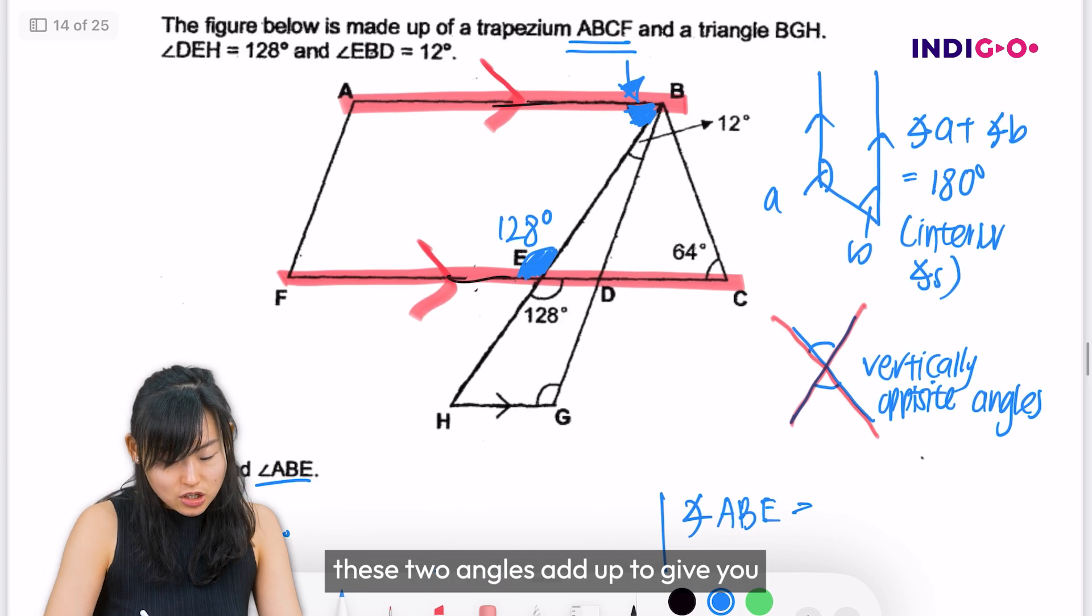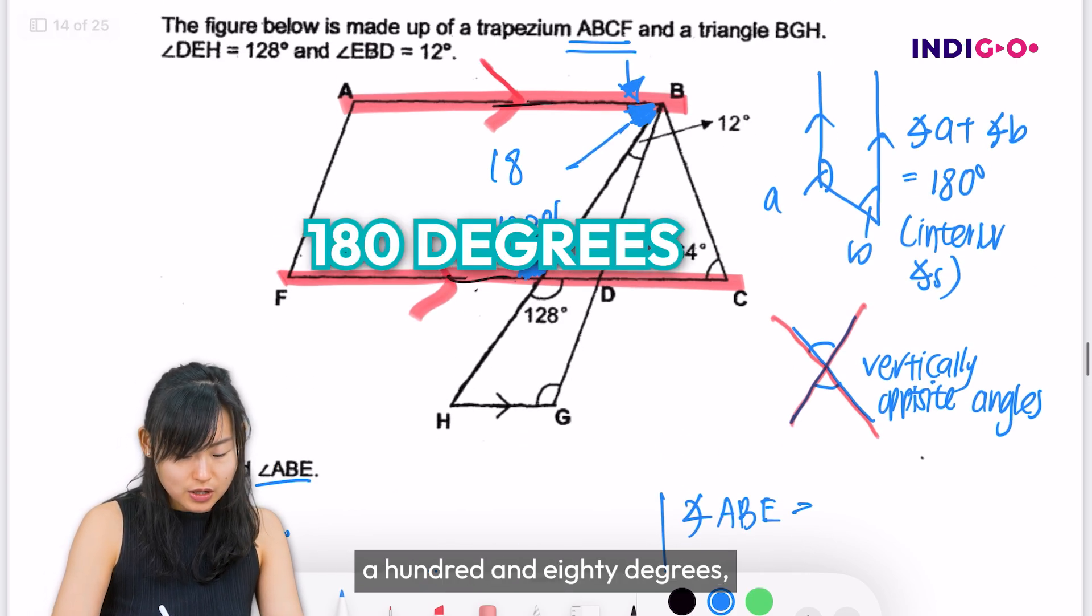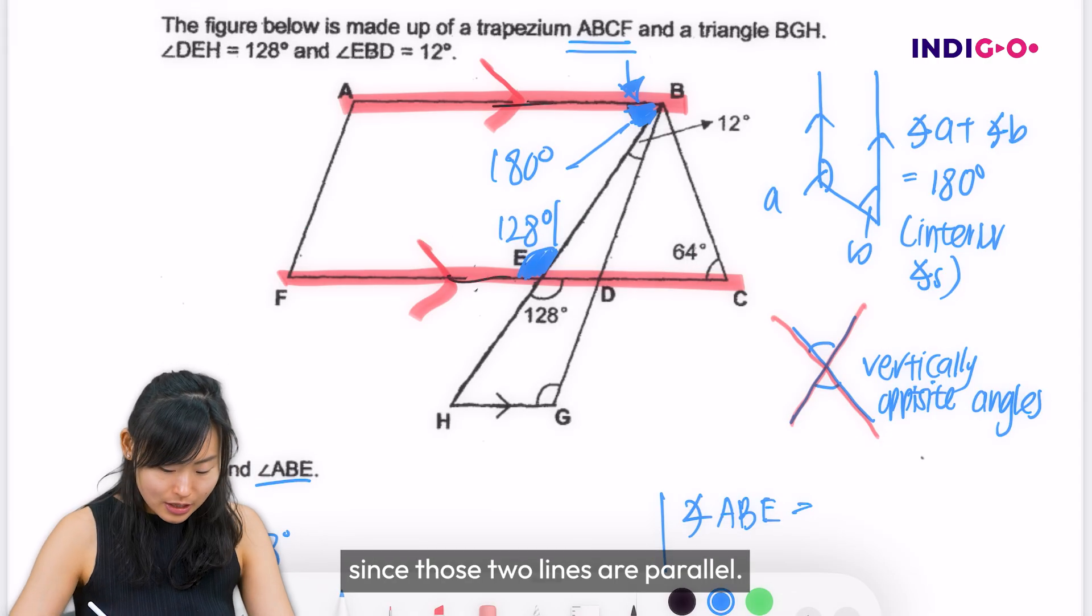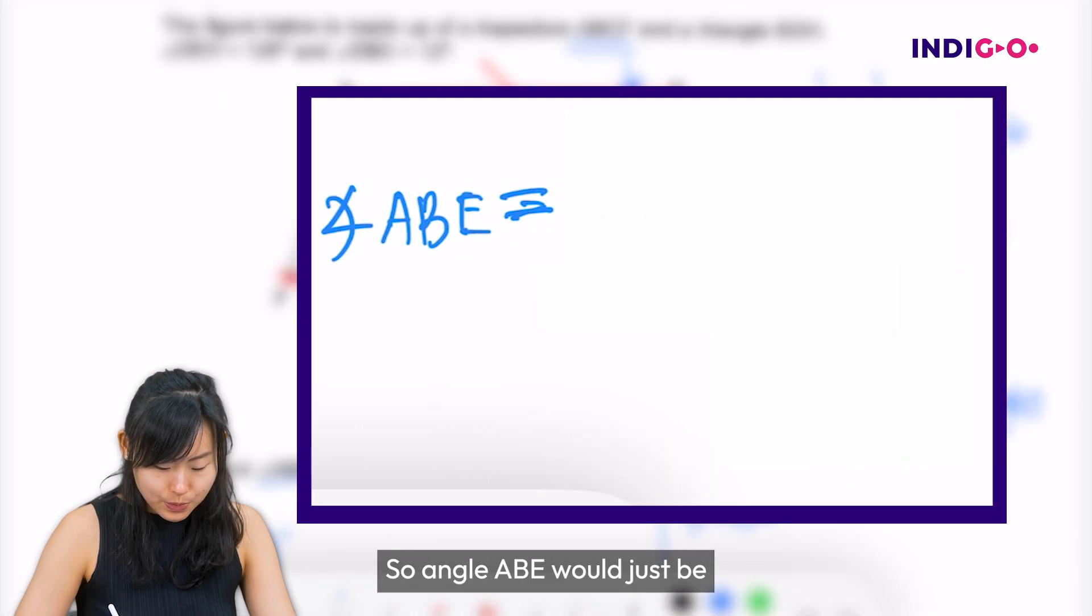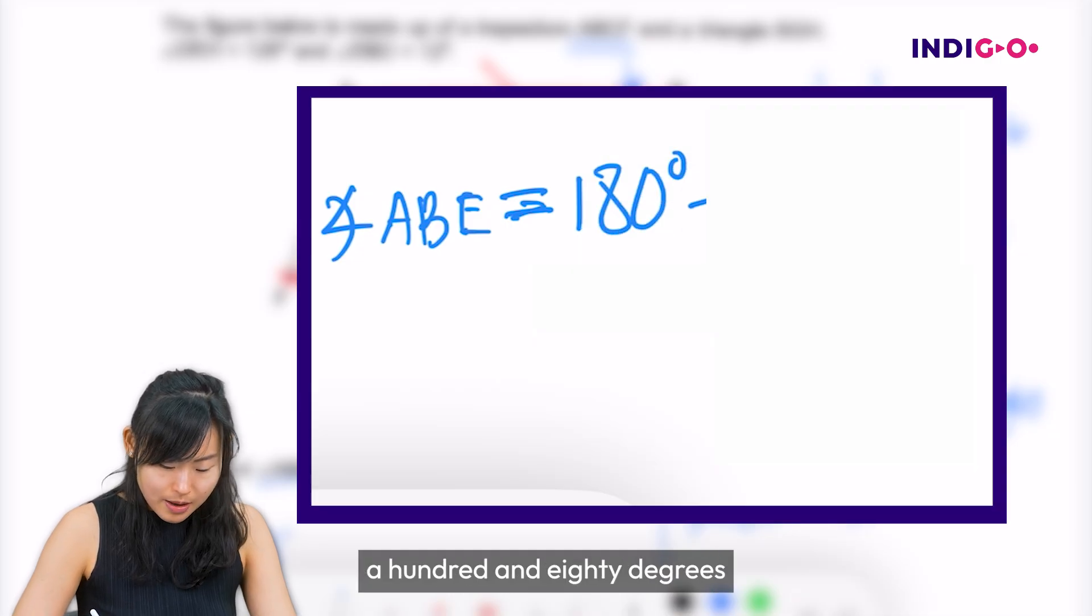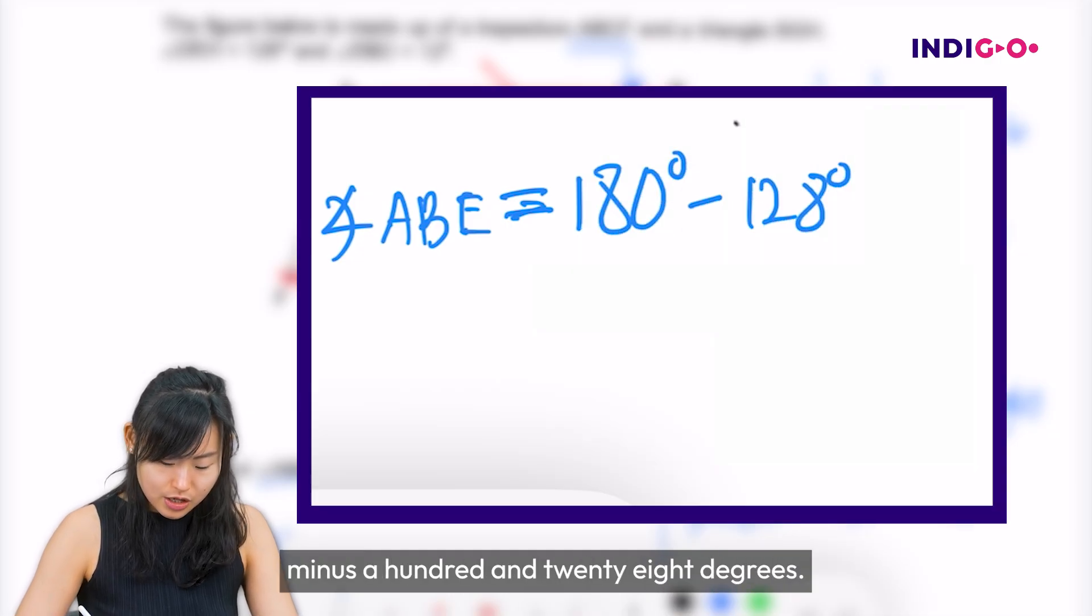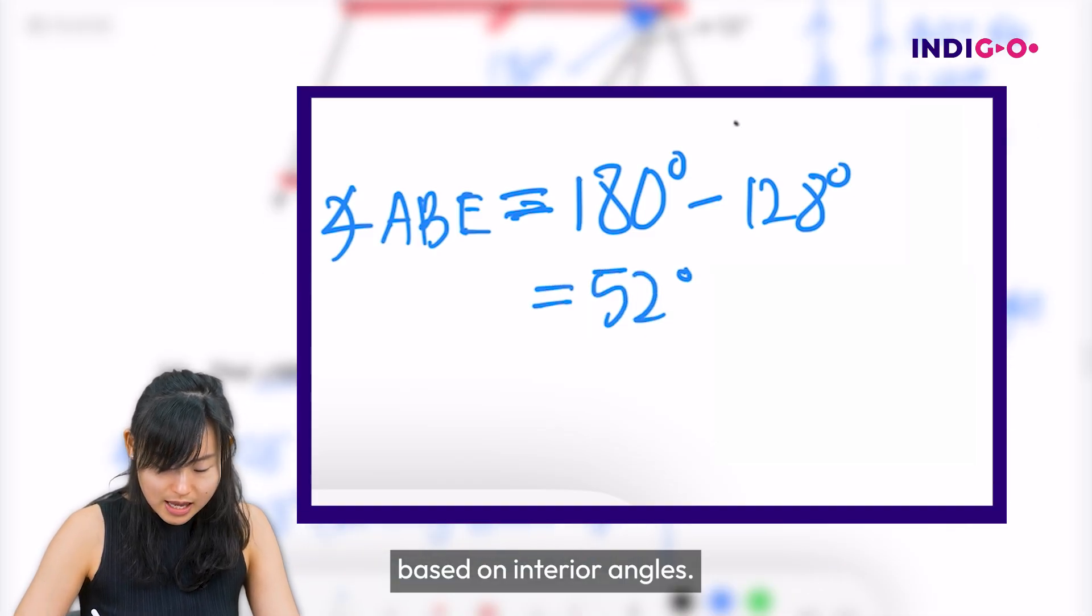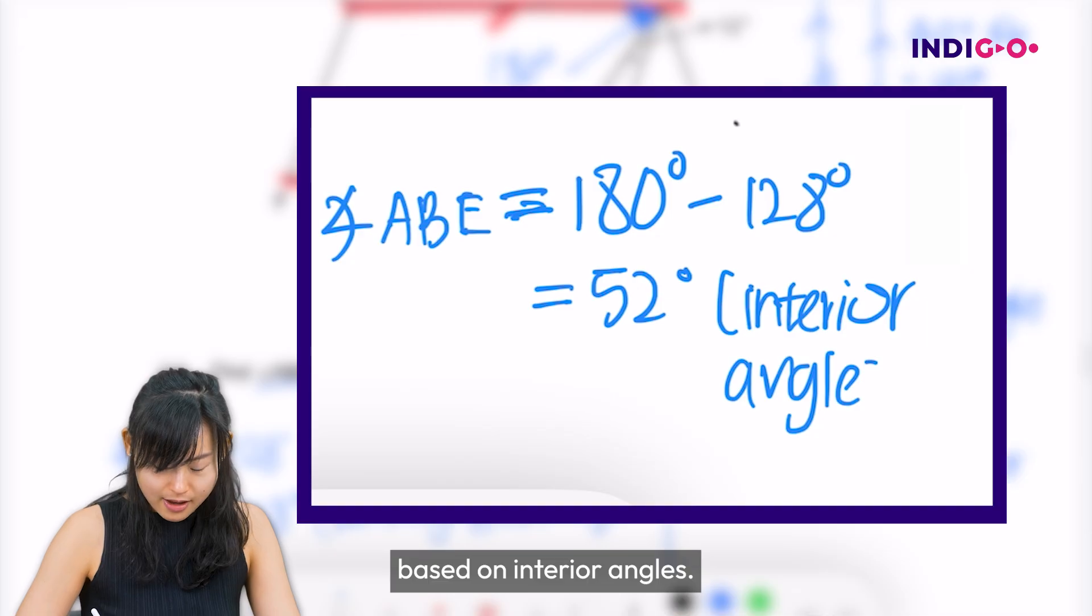Remember, these two angles add up to give you 180 degrees because of interior angles since those two lines are parallel. So angle ABE would just be 180 degrees minus 128 degrees. And that's going to give us 52 degrees based on interior angles.